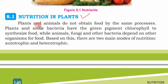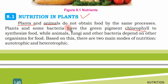Plants and animals do not obtain food by the same process. Plants and some bacteria have the green pigment chlorophyll to synthesize food, while animals, fungi, and other bacteria depend on other organisms for food.